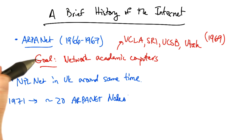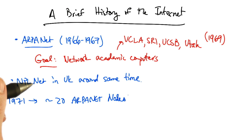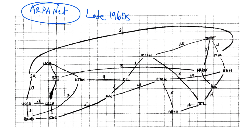There were two cross-country links, and all of the links were at 50 kbps. Here is a rough sketch of the ARPANET as drawn by Larry Roberts in the late 1960s.